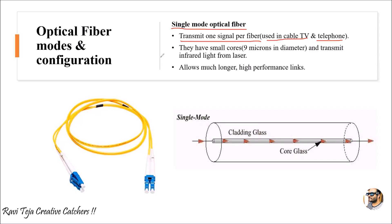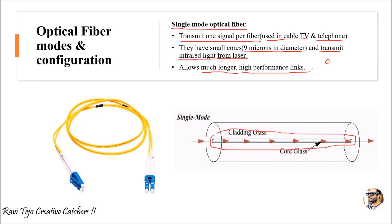Single mode optical fibers have small cores — the midpoint core is very thin, around 9 microns in diameter. They transmit infrared light from a laser source, so the light looks like a laser beam where a single signal is transmitted. This makes single mode much more useful for longer distance and high-performance communication systems.